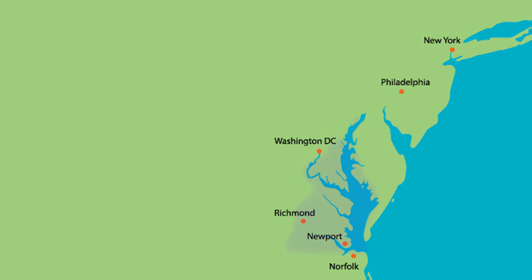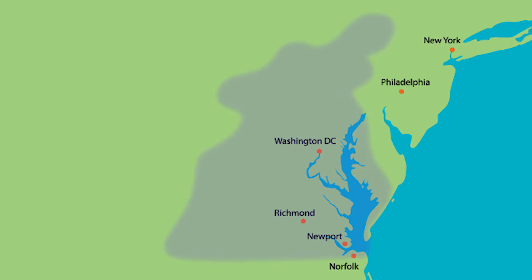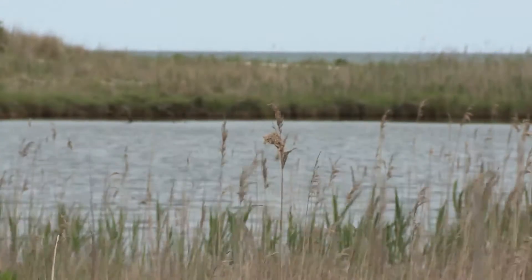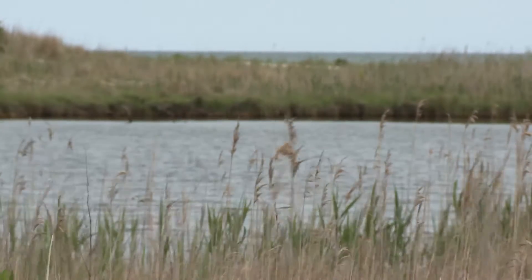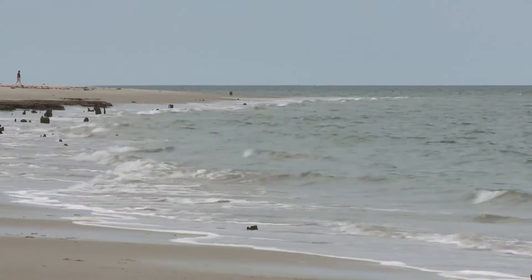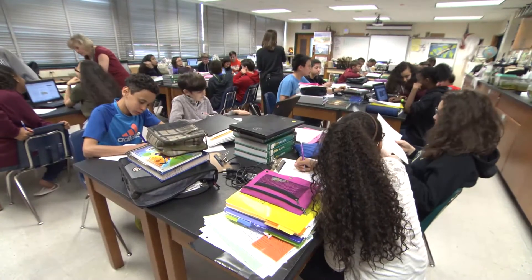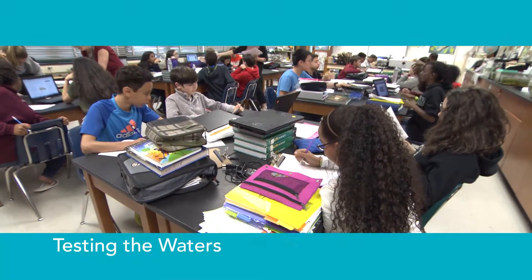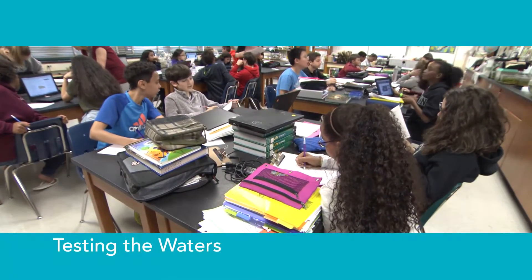The Chesapeake Bay watershed stretches more than 500 miles from Virginia to New York. Its rivers and streams drain into the Chesapeake Bay. The watershed is the topic of my seventh grade environmental science project called Testing the Waters.